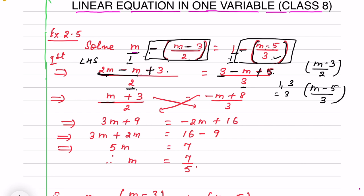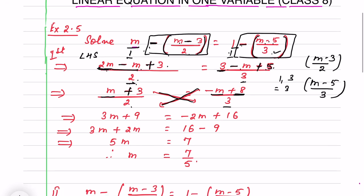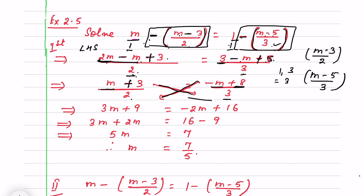Simplifying the LHS: 2m minus m plus 3, all over 2. Simplifying the RHS: 3 plus 5 is 8 and minus m, all over 3. So LHS is (m plus 3) over 2 and RHS is (8 minus m) over 3. Now I cross multiply: 3 into (m plus 3) gives 3m plus 9, equal to 2 into (8 minus m) giving 16 minus 2m.